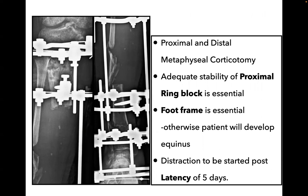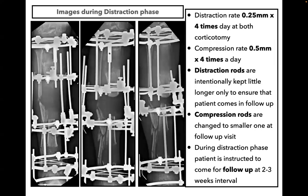Distraction is started after a latency period of five days. There are basically three phases of distraction osteogenesis: the first is the latency phase, the second is the distraction phase, and the third is the consolidation phase. These are a few images while the biplanar was in distraction. As one can see, the gap at both distraction sites is gradually increasing and at the gap site the gap is gradually decreasing. The rate of distraction at both corticotomies is 0.25 mm four times a day, and the compression rate is 0.5 mm four times a day.